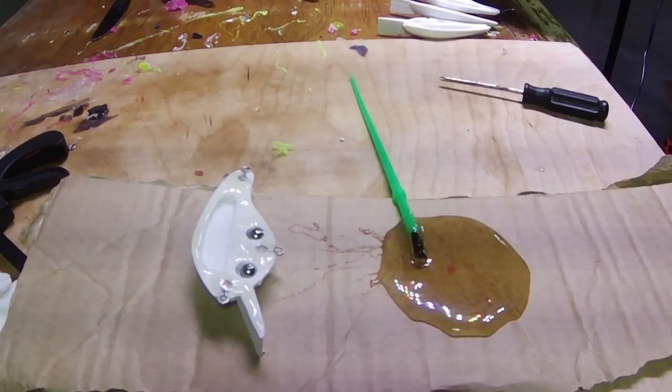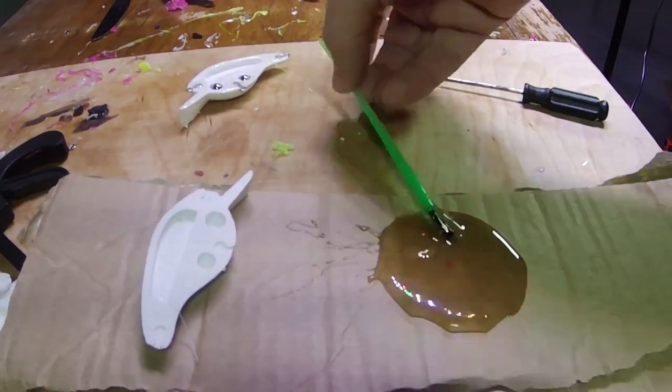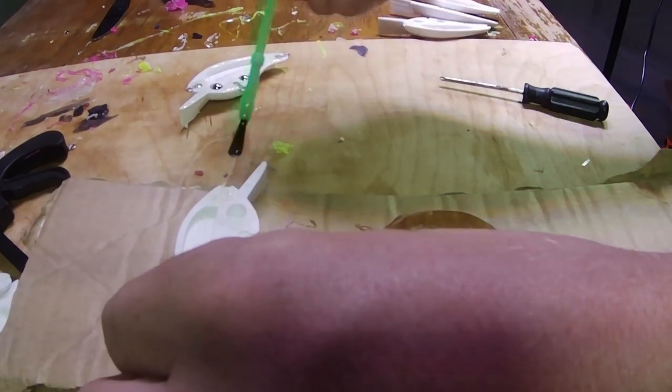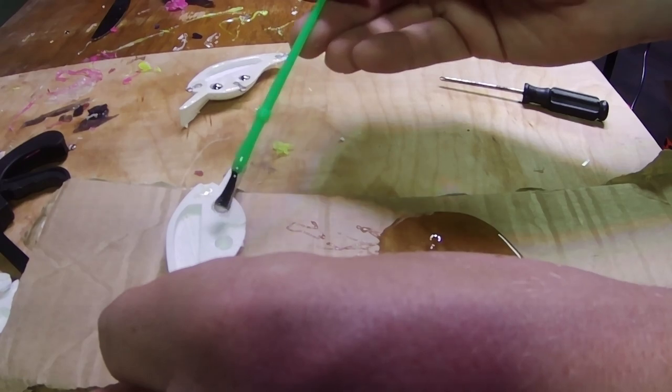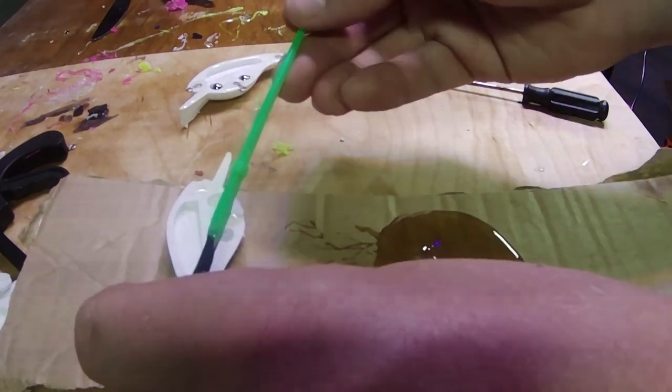So that looks good for that. I also like to take the other half that we're going to stick together and then just glob some in the other side of the hook hanger holes. I don't know how necessary this is, but it makes me feel better. So we're going to do it anyway.